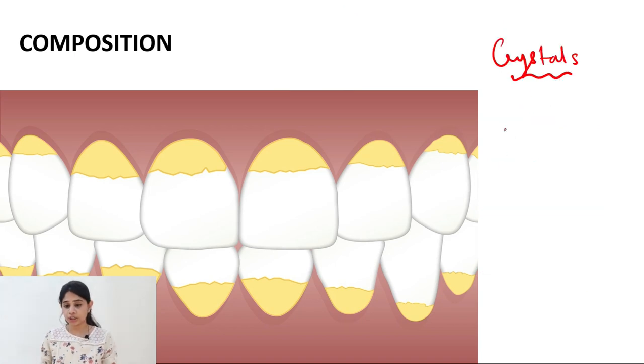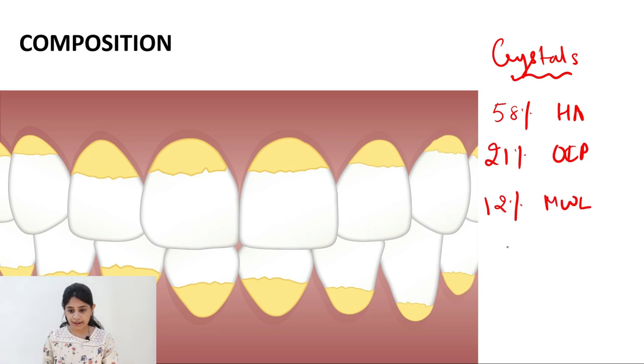So if we talk about the third component of the inorganic group which is the crystals it's quite important. So make sure you remember them. So 58% of the crystals is formed by the hydroxyapatite 21% by the octocalcium phosphate 12% by the magnesium whitlockite and 9% by the brushite. And again remember brushite and octocalcium phosphate are seen in majority in the supra-gingival calculus whereas the magnesium whitlockite crystals are seen majority in the sub-gingival calculus.